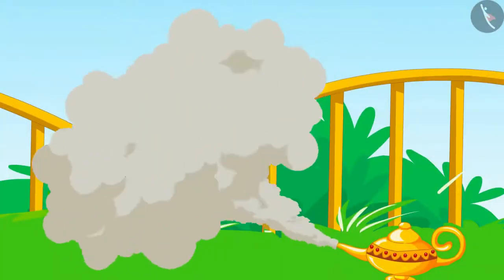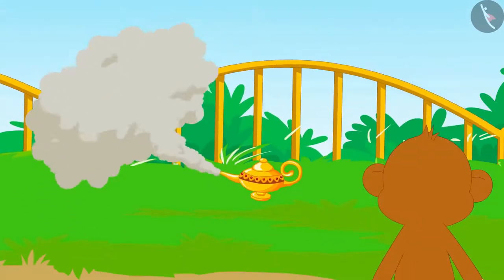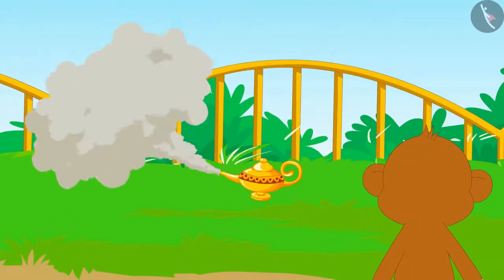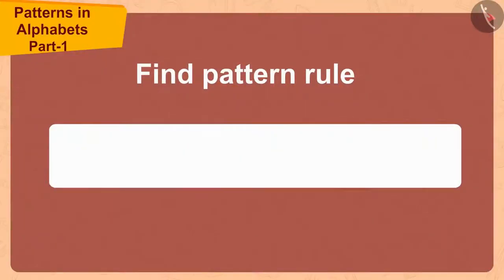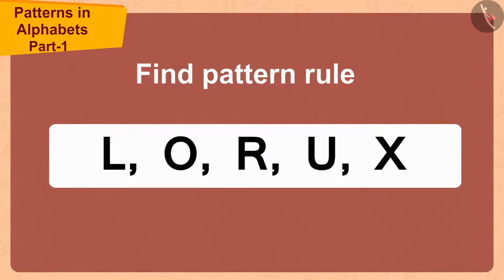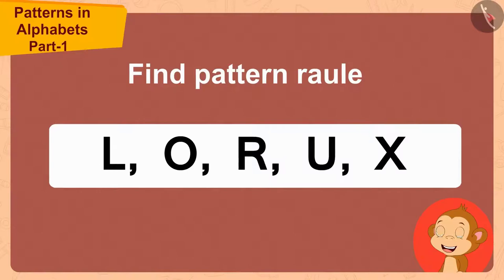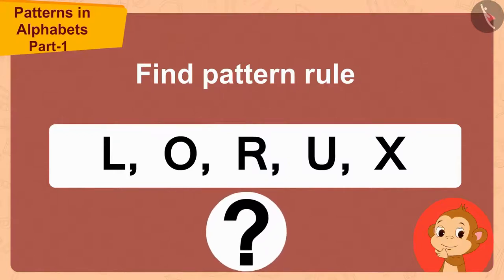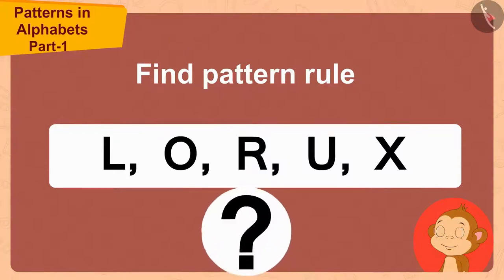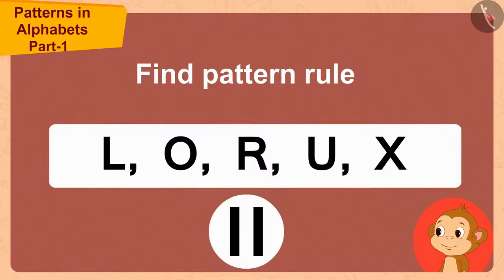'This is your last pattern. Find the rule of this pattern and fulfill your third and last wish.' The Genie showed Babban the third pattern. Babban was shocked. 'It looks like a very difficult pattern.' Children, can you help Babban in finding the rule of this pattern? If you want, you can stop the video and find the answer.